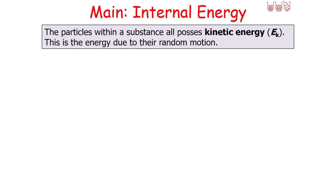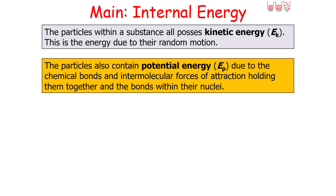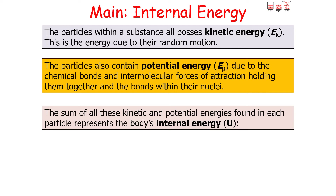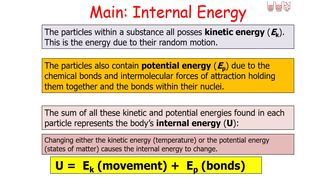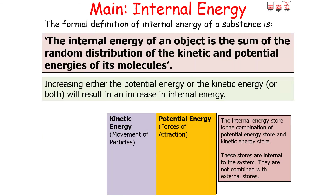The particles within a substance all possess kinetic energy due to their random motion. The particles also contain potential energy due to chemical bonds, intermolecular forces of attraction, and the bonds within their nuclei. The sum of all these kinetic and potential energies of each particle represents the body's internal energy. The formal definition is: the internal energy of an object is the sum of the random distribution of the kinetic and potential energies of its molecules. Changing either the kinetic or the potential energy store causes the internal energy to change.